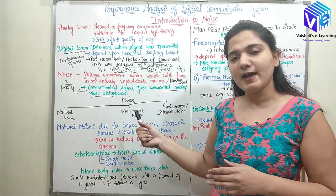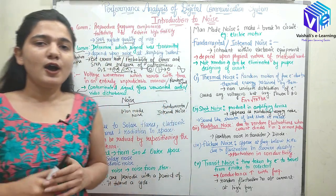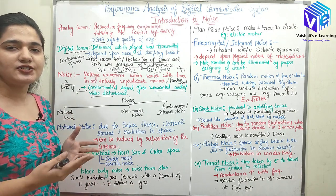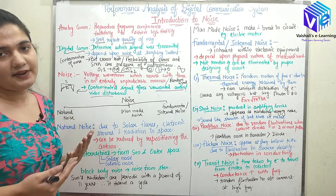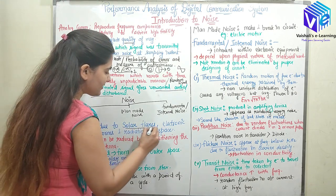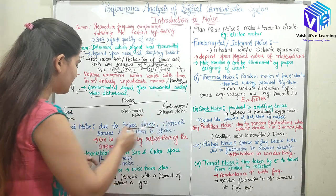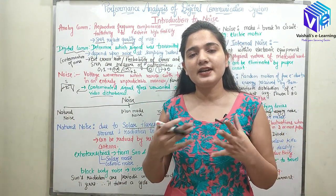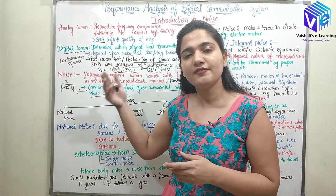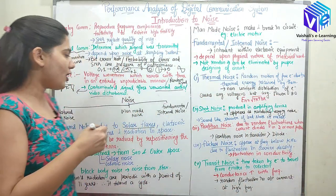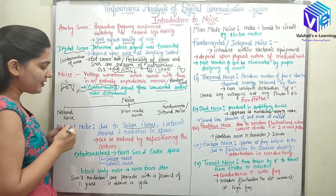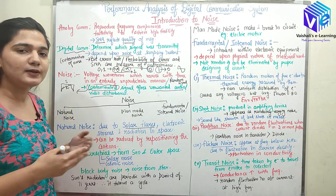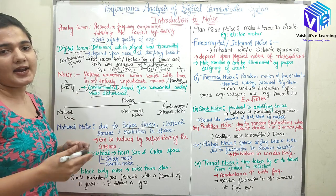Natural noise, as the name suggests, is present naturally in the environment. It is due to solar flares, electronic storms, and radiations in space. These radiations come to the earth and when their frequency components mix with the signal frequency components, they contaminate the signal. When signals from solar flares, electronic storms, and space radiations mix with the communication signal, the signal is changed and disturbances occur.